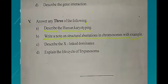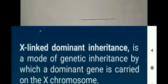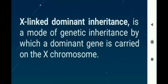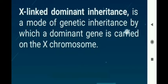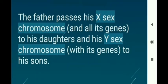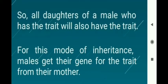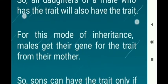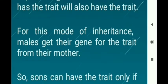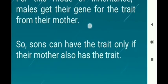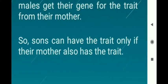The third question is describe X-linked dominance. X-linked dominant inheritance is a mode of genetic inheritance by which a dominant gene is carried on the X chromosome. The father passes his X sex chromosome to his daughter and his Y sex chromosome to his son. So all daughters of a male who has the trait will also have the trait. For this mode of inheritance, males get their gene for the trait from their mother, so sons can have the trait only if their mother also has the trait.